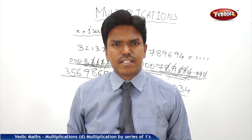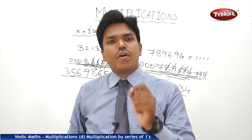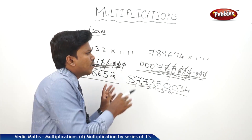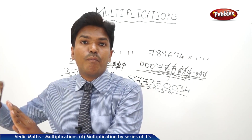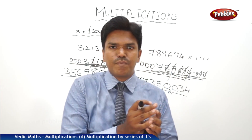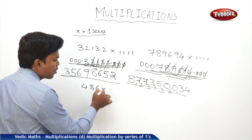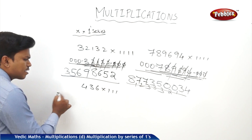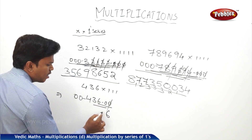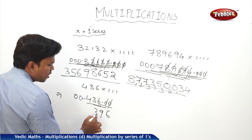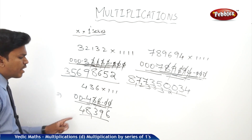This method works for any 1 series — 5 ones, 6 ones, 7 ones — it doesn't matter. Now, we will see special cases. If the number of digits equals the number of 1s — for example, 436 into 111 — there is no difference. Drop 436, add two zeros before and after. 0+0+6=6, leave rightmost; 6+3=9; 9+4=13, drop 3, carry 1; 7+1=8; finally 4. The answer is 48396.